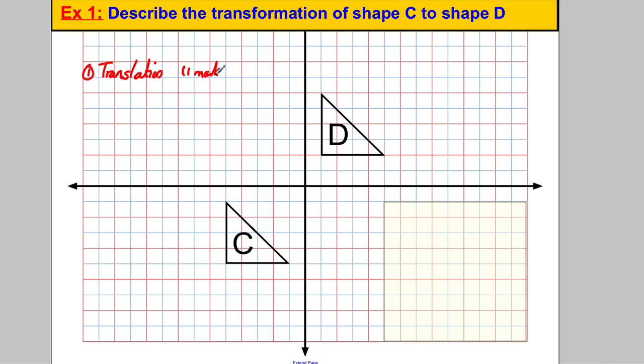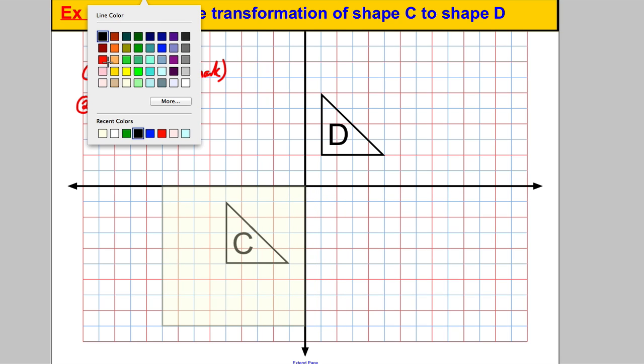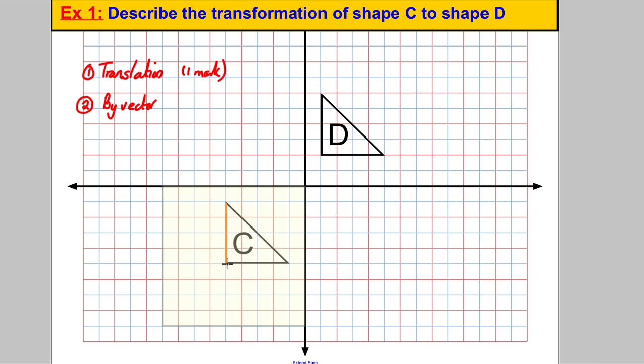You get one mark for stating it's a translation and another mark for the vector. There are two ways to do this. You could use tracing paper over shape C, trace it out, and move it: one, two, three, four, five, six places to the right. So the vector is 6 on top. Then it's going up one, two, three, four, five, six, seven. So it's by vector 6, 7.